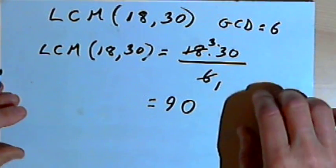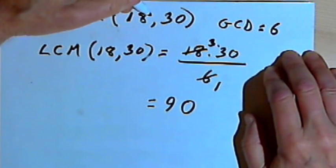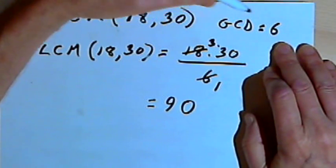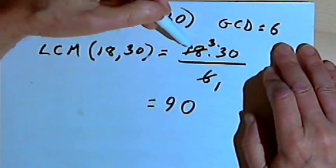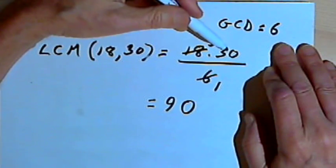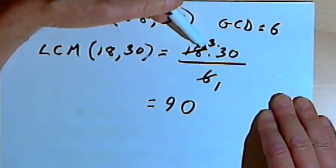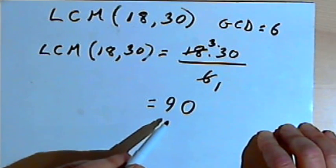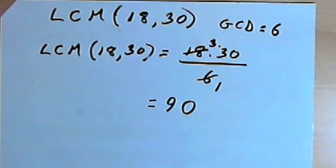So once again, the basic process goes like this: you find the greatest common divisor, then divide that greatest common divisor into the product of the two numbers you're dealing with. Simplify that division problem, and that gives you the least common multiple. You might want to try this when you want an alternate way to find the LCM. That's it for now — take care, I'll see you next time.